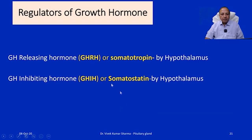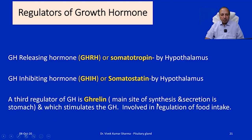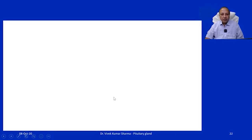The hypothalamus releases growth hormone releasing hormone (somatotropin releasing hormone) and growth hormone inhibitory hormone, which is primarily somatostatin. New studies also suggest a third regulator: ghrelin, secreted from the stomach, which stimulates growth hormone secretion and is also involved in the regulation of food intake.